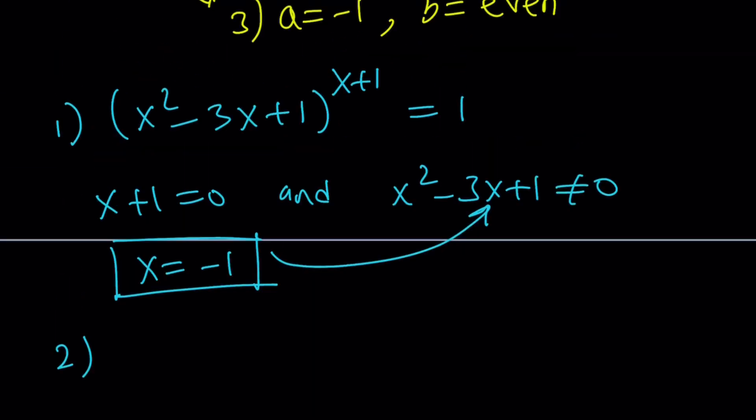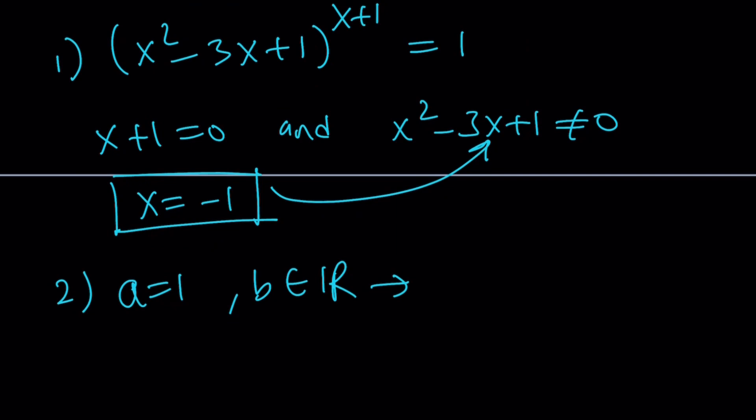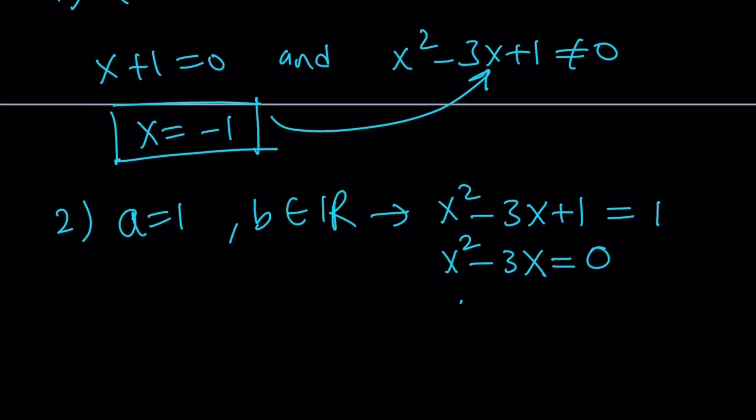The second case scenario is a equals 1 and b is a real number. From here, our original expression, the base is going to equal 1. From here we get a simple quadratic. Set it equal to 0 and then factor out, and you get two solutions: x equals 0 and x equals 3.